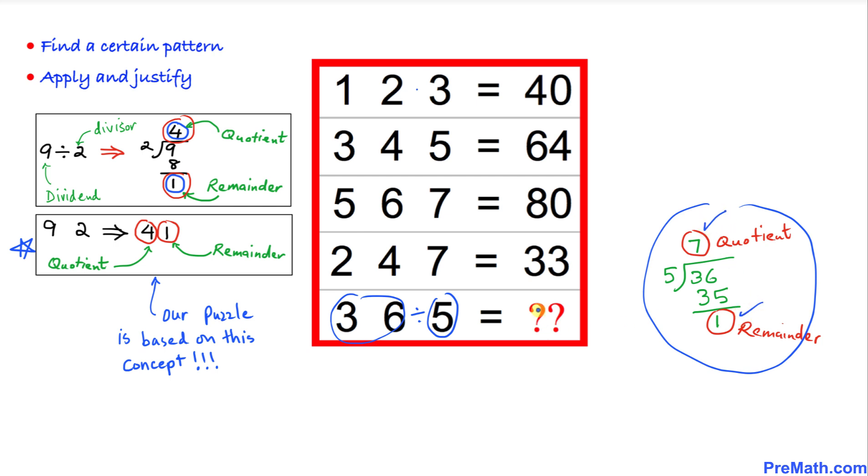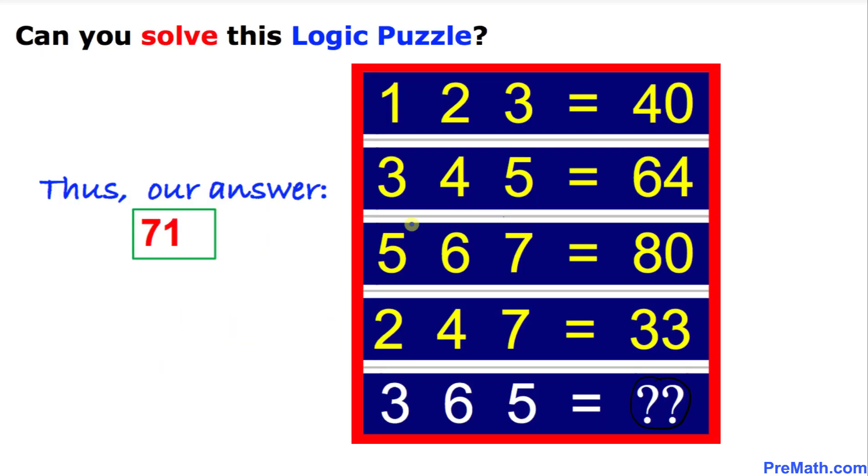Then we can see that 7 is our quotient and 1 is our remainder, so I can write down 7 1 and that is going to be our answer. Thus our final answer turns out to be 71. Thanks for watching and please don't forget to subscribe to my channel for more exciting videos.